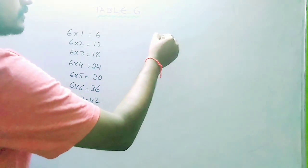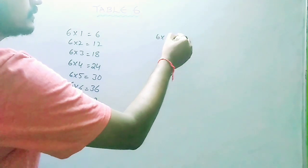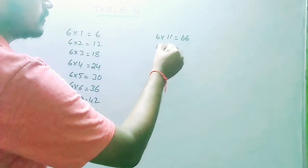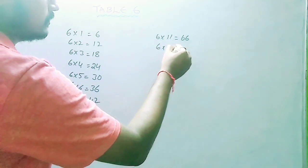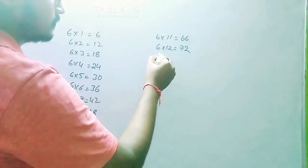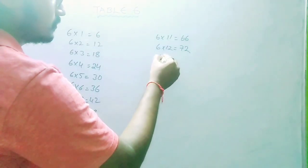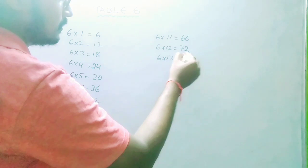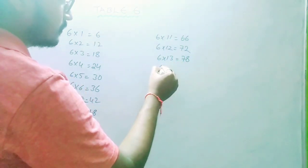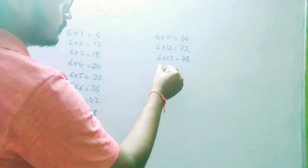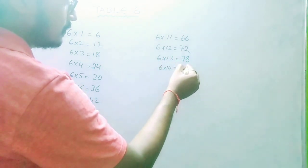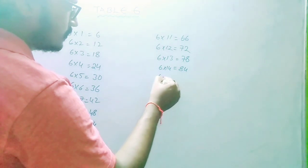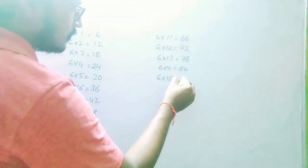6 11s are 66, 6 12s are 72, 6 13s are 78, 6 14s are 84, 6 15s are 90.